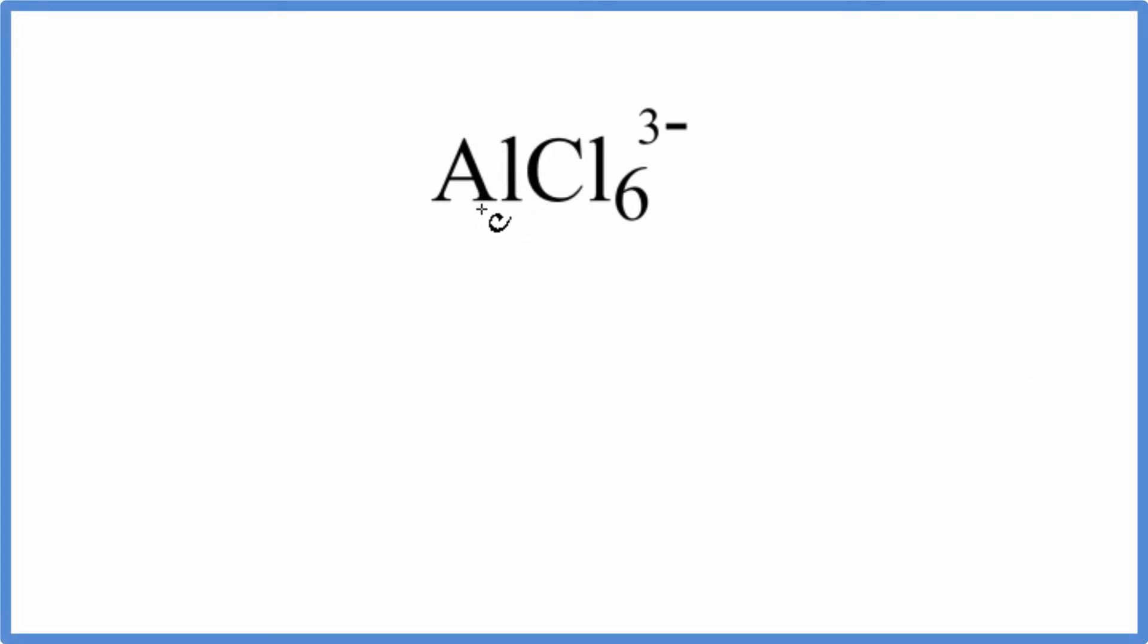To write the Lewis structure for AlCl6 3-, the first thing we need to do is count up the valence electrons. Aluminum, group 13, sometimes called 3A, has three valence electrons.